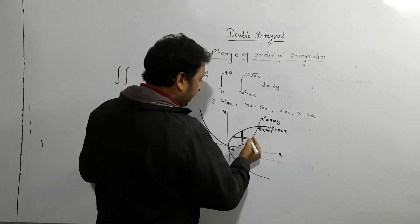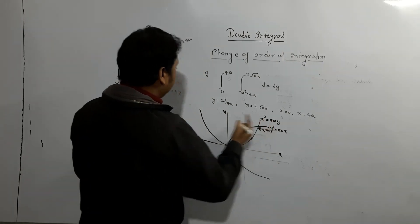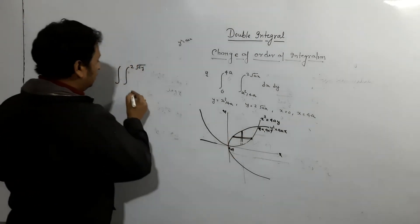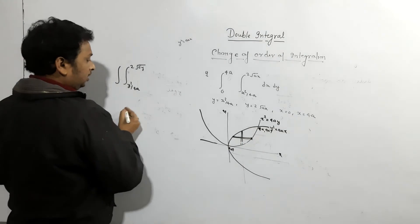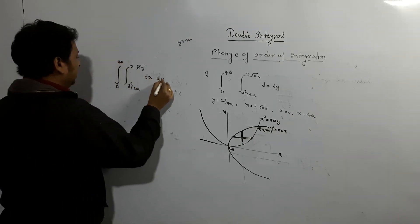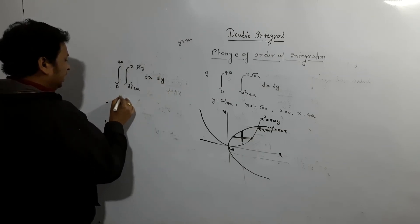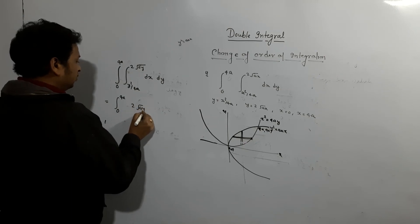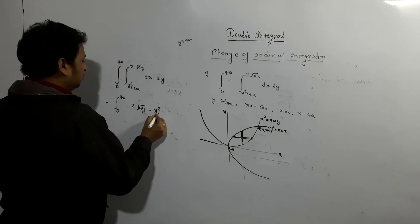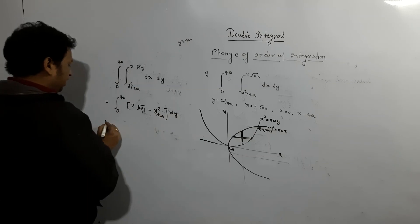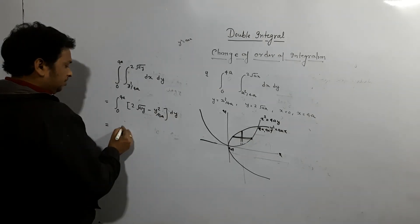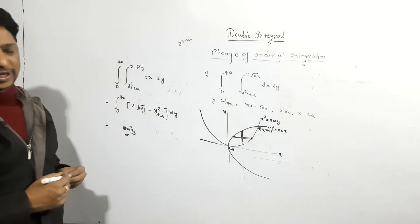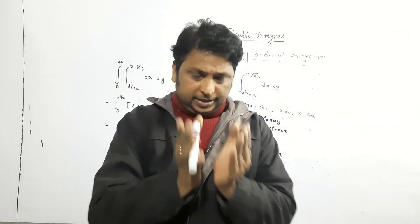Now we take a horizontal strip. The x value goes from x = y²/4a (lower limit) to x = 2√(ay) (upper limit), and y goes from 0 to 4a. Now you can calculate easily — integrate with respect to x first. It comes to 2√(ay) − y²/4a, and then integrate with respect to y from 0 to 4a. The answer is 16a²/3. Please check it — you can integrate easily since you have 2√a outside and √y integration.